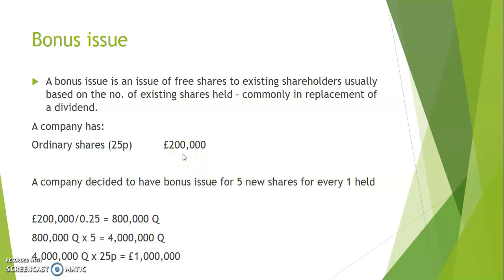So the business already has £200,000 worth of shares, and they are going to issue four million new shares with a book value of £1 million. In total, the books will show £200,000 plus £1 million, giving 1.2 million pounds worth of ordinary share capital. Existing shareholders will have the shares they already held plus their newly issued bonus shares.